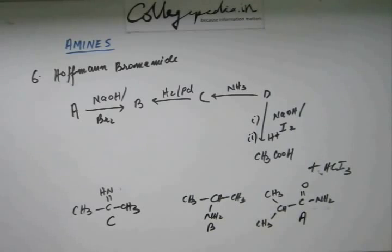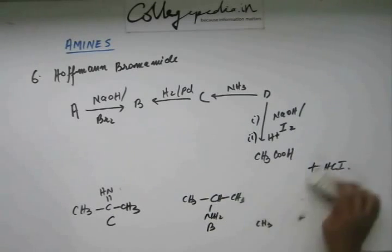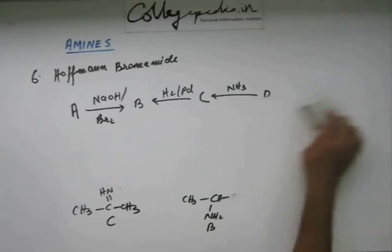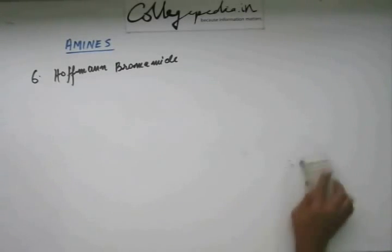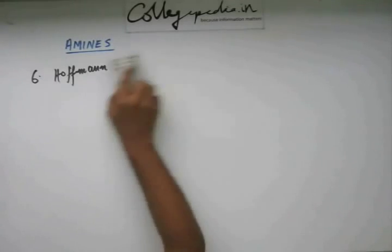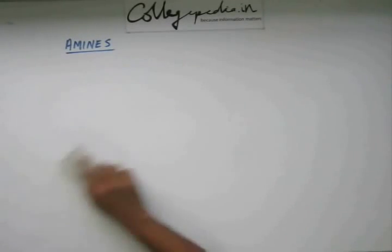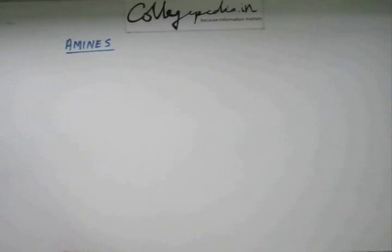Clear? So it's done. Alright. So Hoffman Bromamide is done. Now let's quickly see two more reactions and that will complete the method of preparations of Amine.